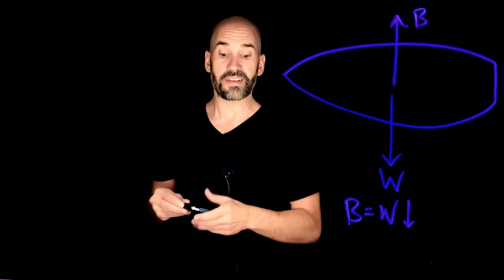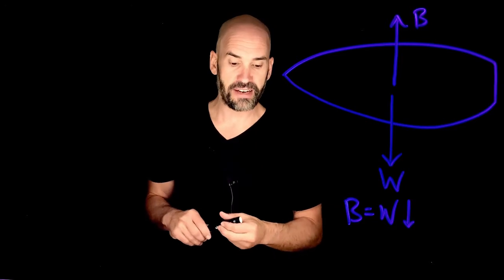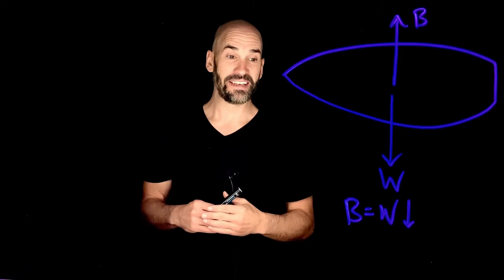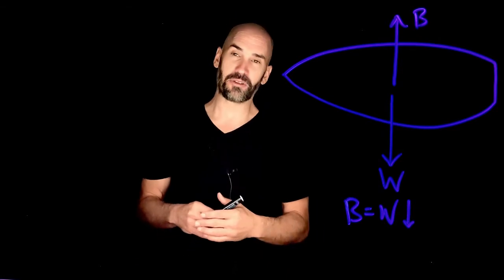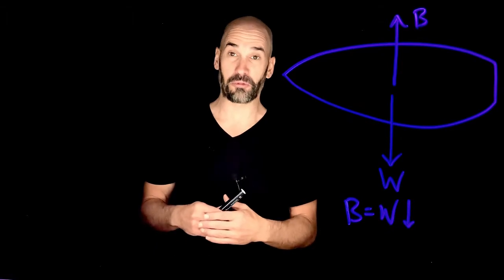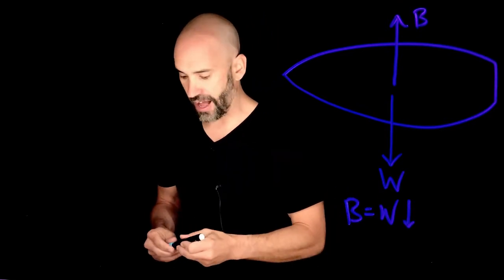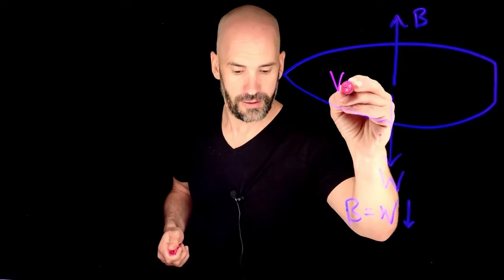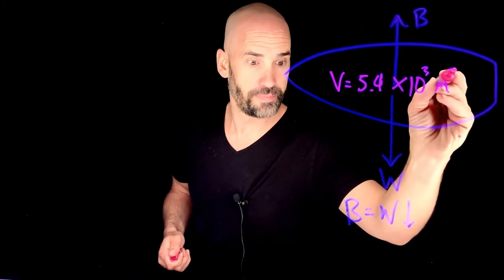So it says normally a Goodyear airship contains about 5.4 times 10 to the 3 meters cubed of helium. So obviously we switch to helium because it's much safer. It's a noble gas, and it's not that much heavier than hydrogen. That just basically tells us that our volume, the volume of this airship is about 5.4 times 10 to the 3 meters cubed.